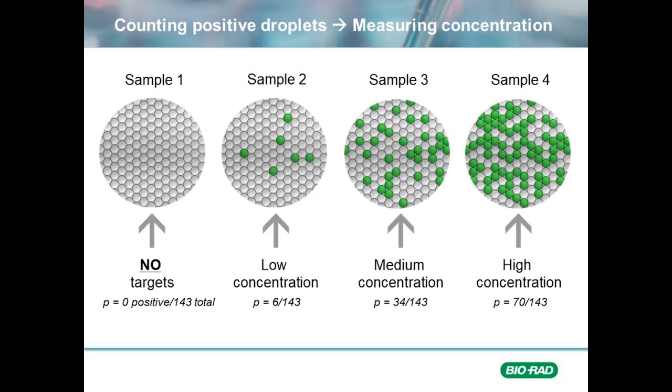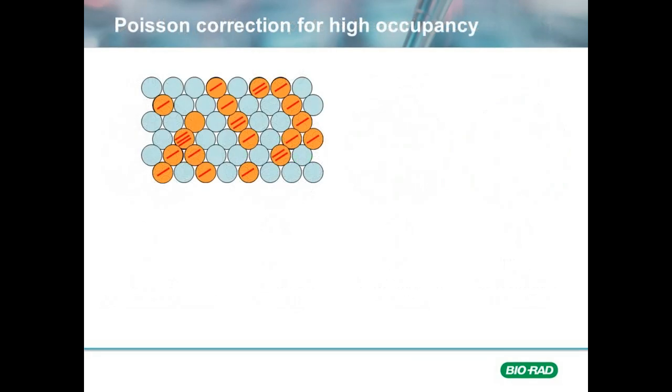When molecules are randomly distributed in a set of droplets, if we have low levels of our target of interest, it's probable that each one will land in its own droplet. On the other hand, as concentration increases, the probability that two of our molecules of interest or more end up in the same droplet increases. To correct for this effect, we use Poisson's equations for his law of small numbers. His equations have been around for over 200 years and are very well established.